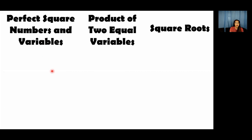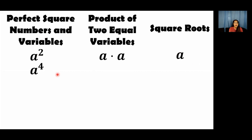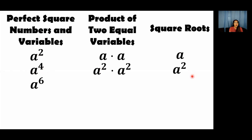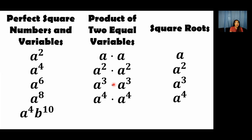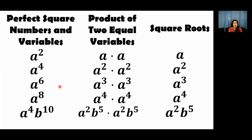Now let us have some examples of perfect square variables. The first one is a squared — any variable having an exponent of 2. When we multiply a times a, the answer is a squared, so the square root of a squared is a. Next, any variable having an exponent of 4 — it is a product of two equal variables, a squared times a squared, so the square root of a to the 4th is a squared. We have a to the 6th power — the square root is a cubed. Then a to the 8th — the square root is a to the 4th. And a to the 4th times b to the 10th — the square root is a squared times b to the 5th. So as you can see, a variable is a perfect square if its exponent is divisible by 2.